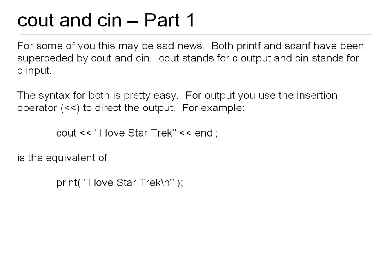The syntax for both commands is pretty easy. For output, you use the insertion operator to direct the output to the cout function. You have the keyword cout, then the insertion operator — which is two less-than signs — then any string literal, number, variable, or constant. If you want multiple ones, you just separate them with the insertion operator; it's like a comma-delimited list but using the insertion operator. So for example: cout << "I love Star Trek" << endl. By the way, endl uses a lowercase L, not an I — it means end of line. That is the programmatic equivalent of printf("I love Star Trek\n"). You can still use \n in cout, whichever is more readable.